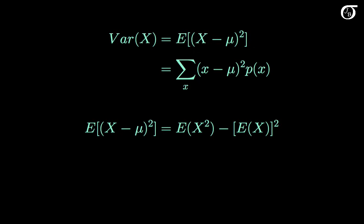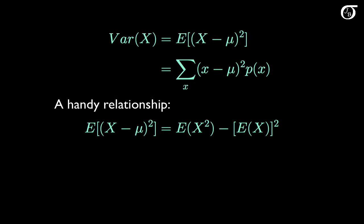What about the variance? The variance of a random variable x is defined to be the expectation of x minus mu squared. It's usually easier to work with the relationship that the variance is equal to the expectation of x squared minus the square of the expectation of x. We already have the expectation of x, so the question boils down to finding the expected value of x squared.